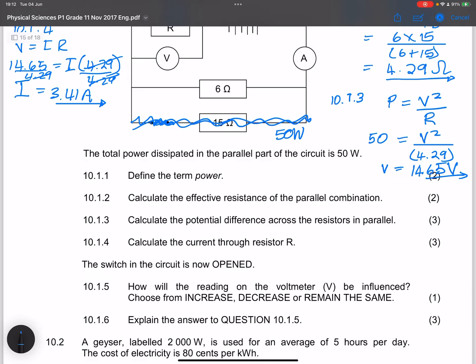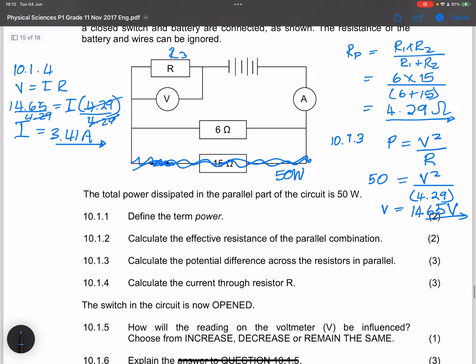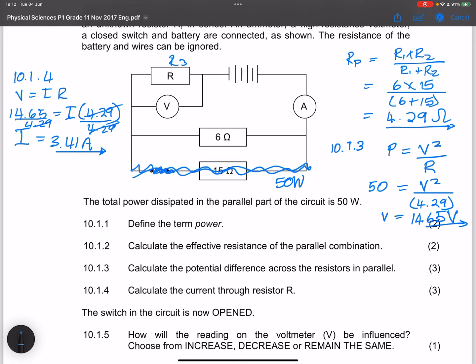Now, they say to us, how will the reading on the voltmeter V be influenced, choose increase, decrease, or remain the same? Now, notice, ladies and gents, that the resistance R of that resistor stays the same. Now, by removing a resistor in parallel, it means that I am actually increasing the resistance of the circuit.